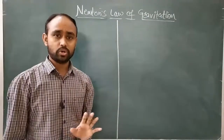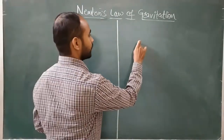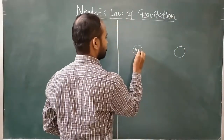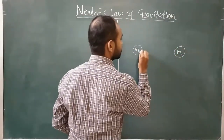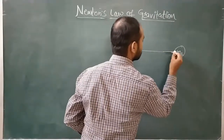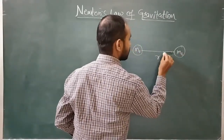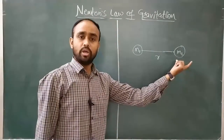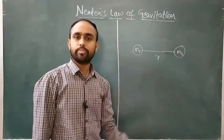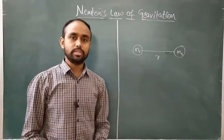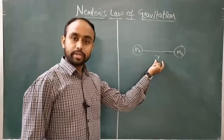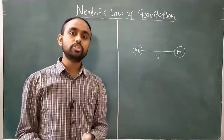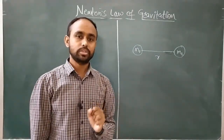What actually does this law state? In general, we know that if we have two masses M1 and M2 which are separated by a distance R, these two different masses which are separated by some distance R are always attracted towards each other.